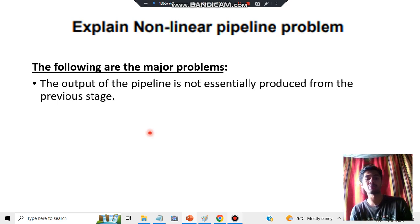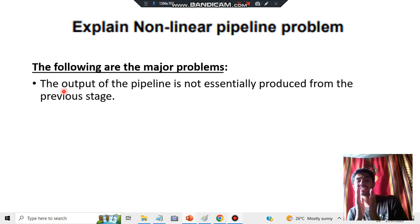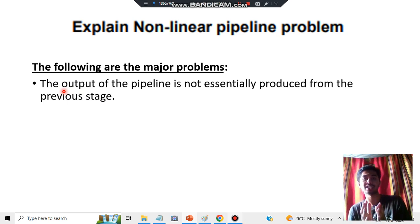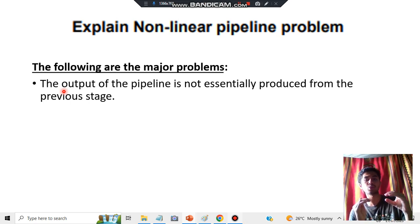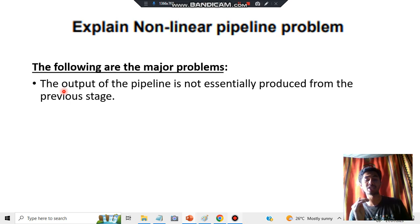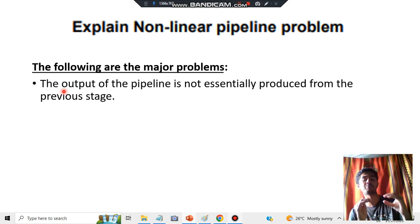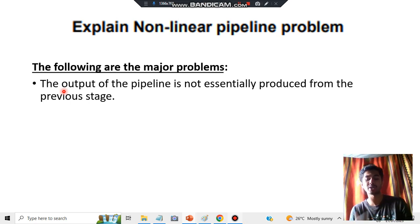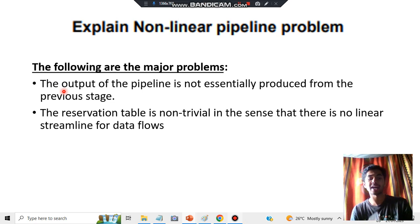The fourth problem is that the output of the pipeline is not essentially produced from the previous stage. Since there are multiple reservation tables, the output can come from any of them, so you are not sure which stage produced that output. That is another disadvantage of the non-linear pipeline.